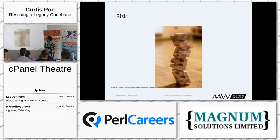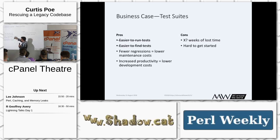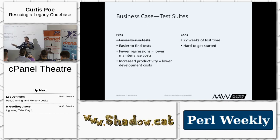Let's look at the business case for test suites. We say easier to run tests and easier to find tests — management doesn't care. They don't see this on a daily basis. Fewer regressions — they don't care about that either. But they do care about lower maintenance costs because that's talking money. Increased productivity — they kind of care about that, but when you say lower development costs, that's starting to talk in a language they're going to understand.